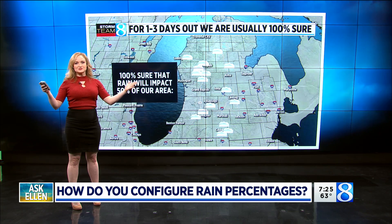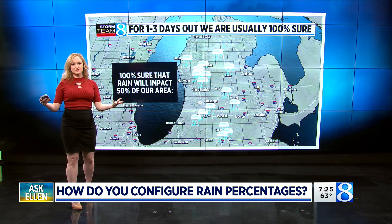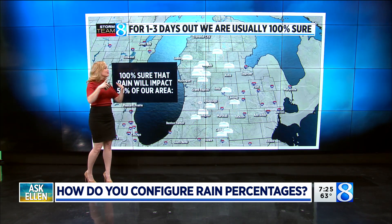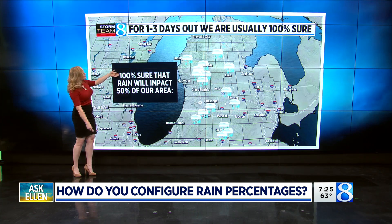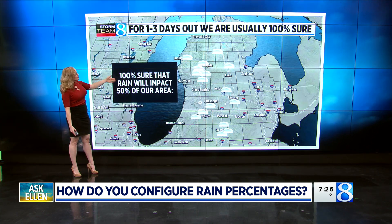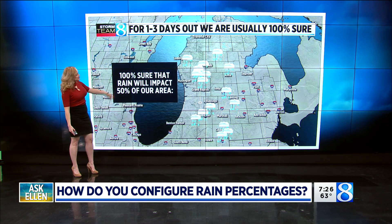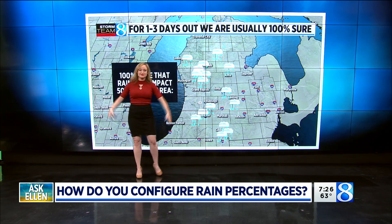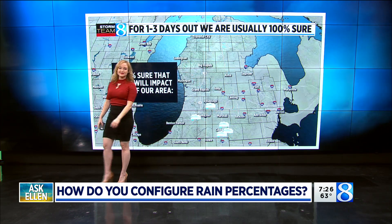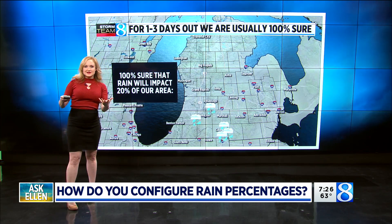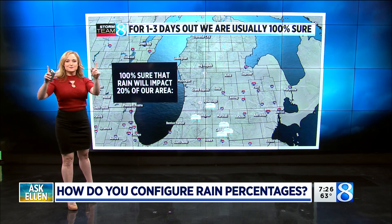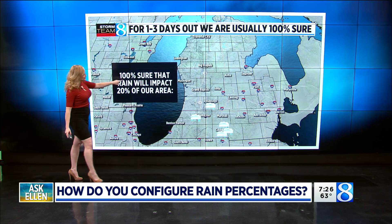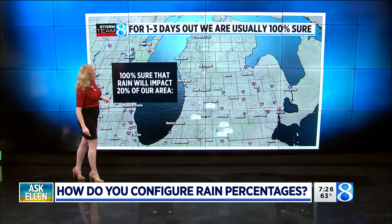Now, usually in the first one to three days we're really certain, so that gives us about 100 percent for the first half of our equation. So if we're 100 percent sure that rain will impact 50 percent of our area, about 50 percent of you will see rain. Let's give you a different day — let's say we're 100 percent sure that only 20 percent of you will see rain.